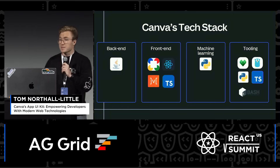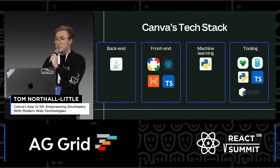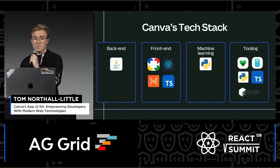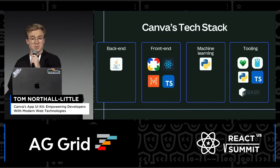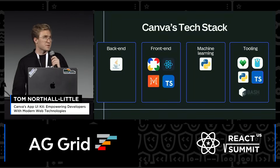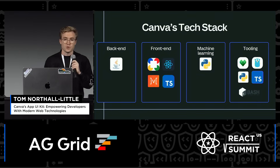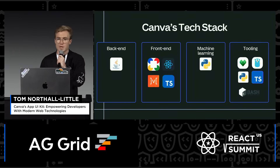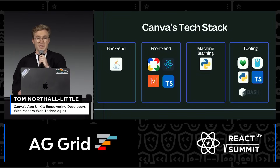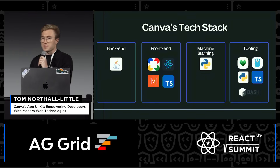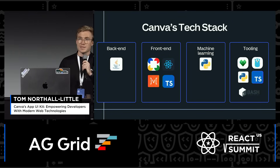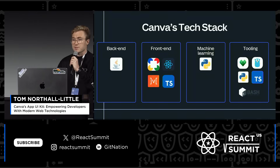Our backend services are generally written in Java. Tooling is written in Go, Bash, TypeScript, or Python. Python is the go-to for ML models. And finally, TypeScript and React is the language of the frontend.